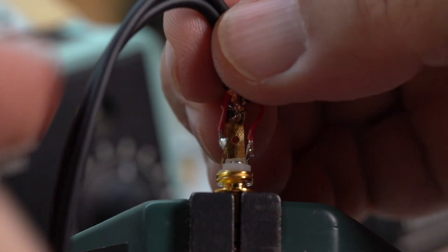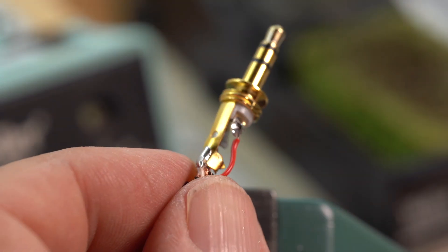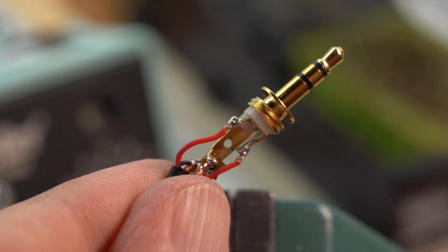And again, once finished soldering, inspect your work, lower the plastic sleeve and screw on the connector body. We've got one final step.